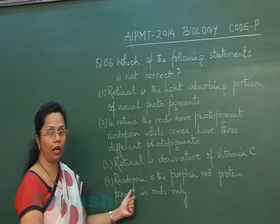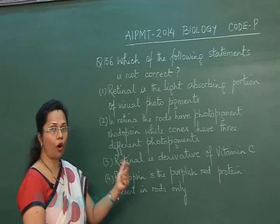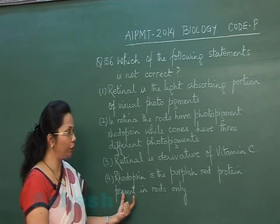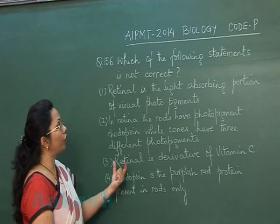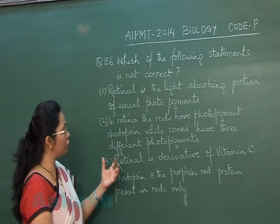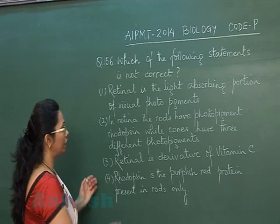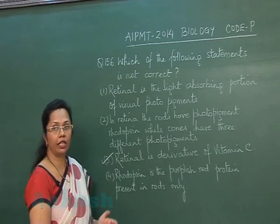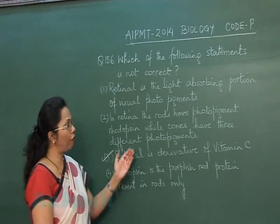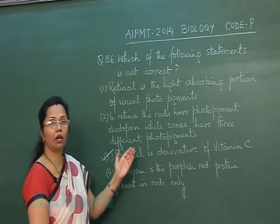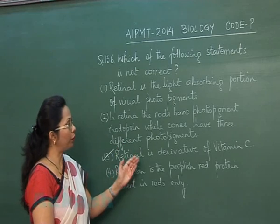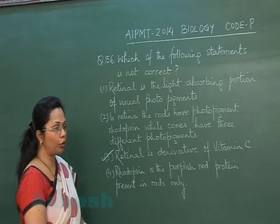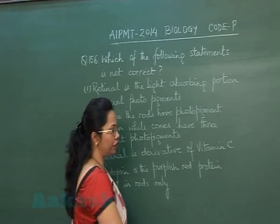The fourth choice — rhodopsin is the purplish-red protein present in the rods only — is correct. Rhodopsin consists of retinal plus opsin protein, and together they form visual purple. Therefore, the statement which is not correct is statement three, where retinal is given as a derivative of Vitamin C, while it is actually a derivative of Vitamin A.